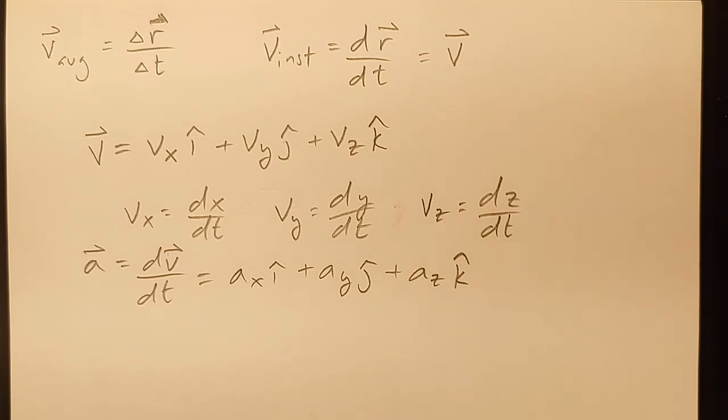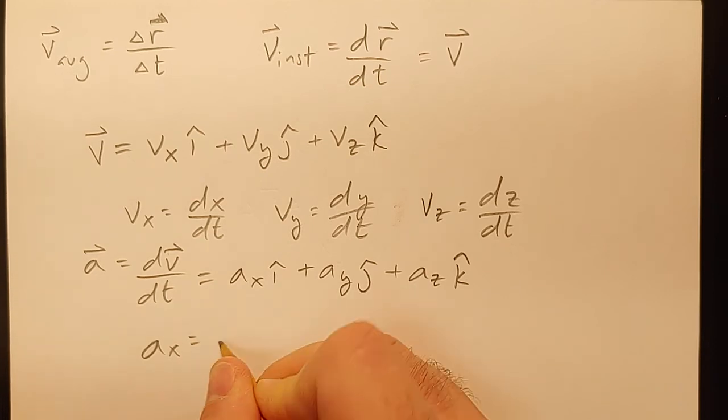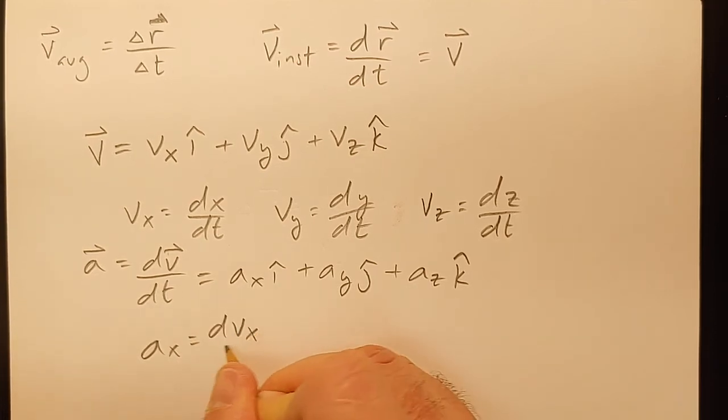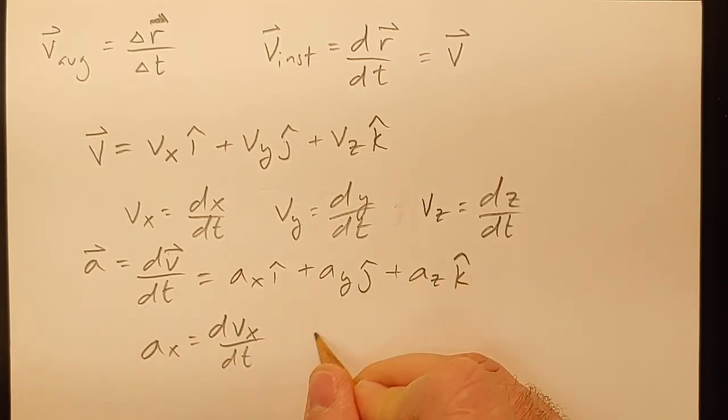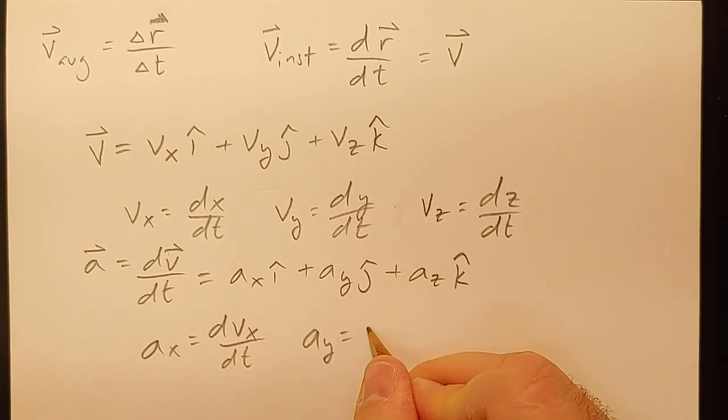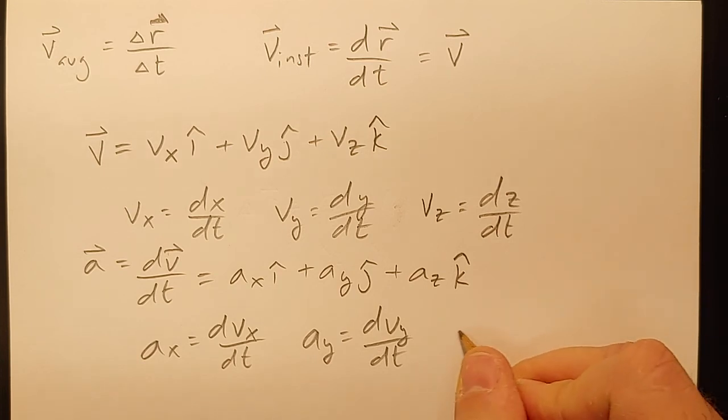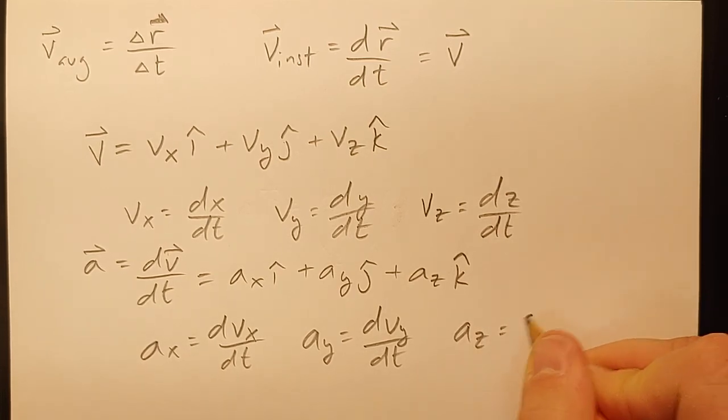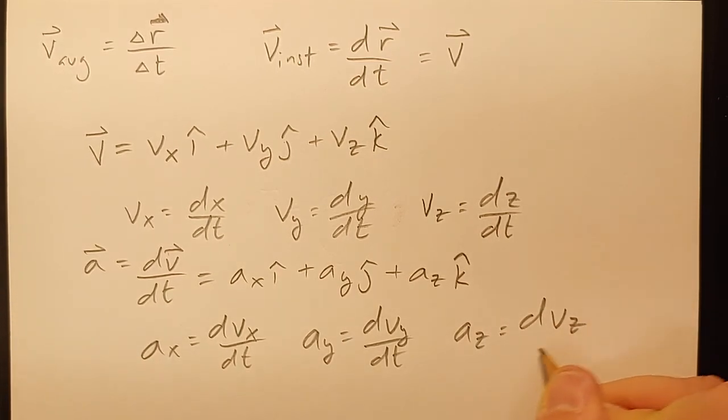A lot of our problems might only be in two directions. They might only have an x and a y component, but you could have an x, a y, and a z component. Just like before, the way that you find the acceleration is the derivative of the velocity. Since we're taking the derivative of this to find that x component of the acceleration, it's just the derivative of vx with respect to time. ay is dvy dt and az is dvz dt.